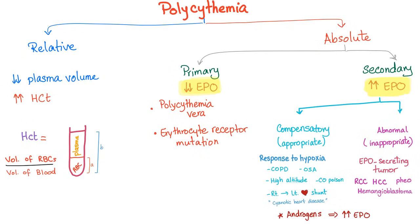Polycythemia means lots of blood cells — specifically lots of red blood cells. We have two types: relative polycythemia and absolute polycythemia. Relative polycythemia is not actually a true polycythemia. What happened here is that plasma volume decreased, so it appears as if the red blood cell volume increased when it didn't. Imagine a test tube with plasma and red blood cells — if we have loss of plasma volume, we have less plasma but the same amount of red blood cells.